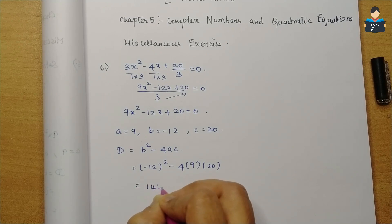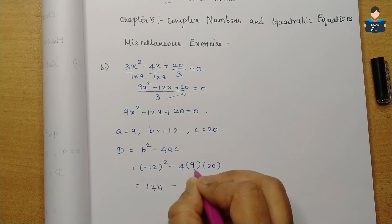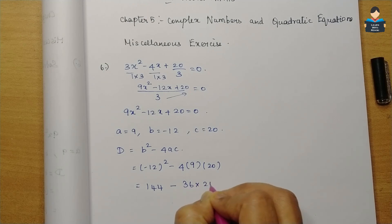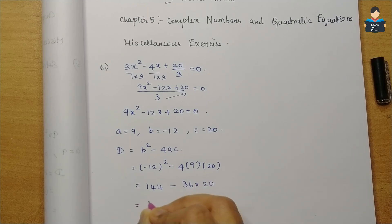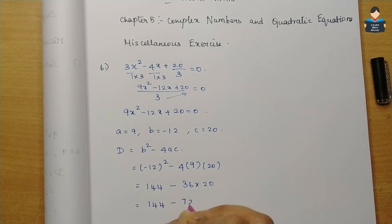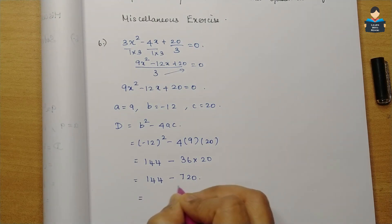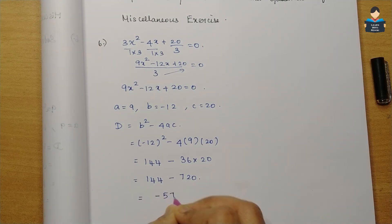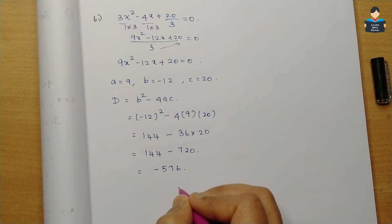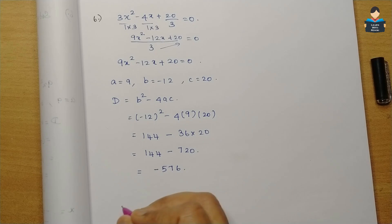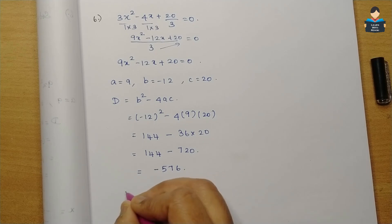(-12)² = 144. Then 4 × 9 = 36, and 36 × 20 = 720. So D = 144 - 720 = -576. Now we substitute this D value into the quadratic formula.